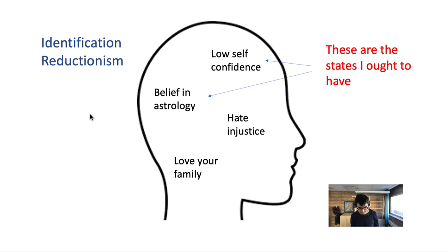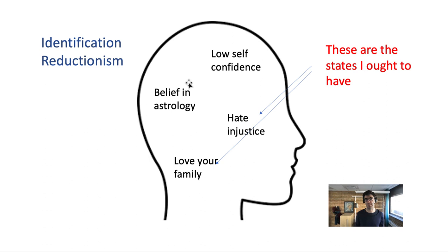The other problem is that identification reductionism may be too narrow: there might be genuine cases of self-determination caused by beliefs you don't identify with. For example, your belief that you really love cats — a belief you don't deeply identify with — might still play a role in a genuine act of self-determination.